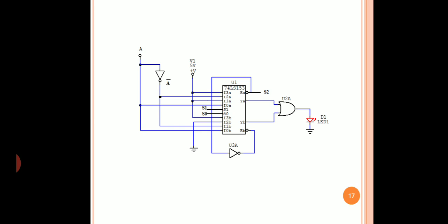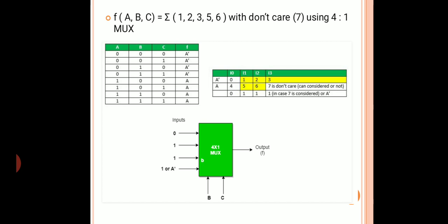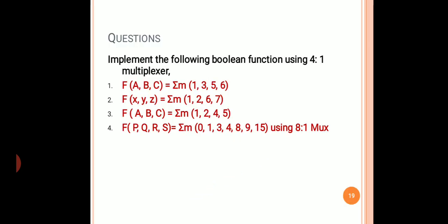Again, using don't cares, the same approach applies. We have to implement a 3-variable function using a 4-to-1 MUX. Using the folding technique, if you observe the second table, 7 is in the don't care. If you don't consider 7, connect it to A'; if you do consider 7, connect it to VCC. These are questions for you — you can implement this using a 4-to-1 MUX.